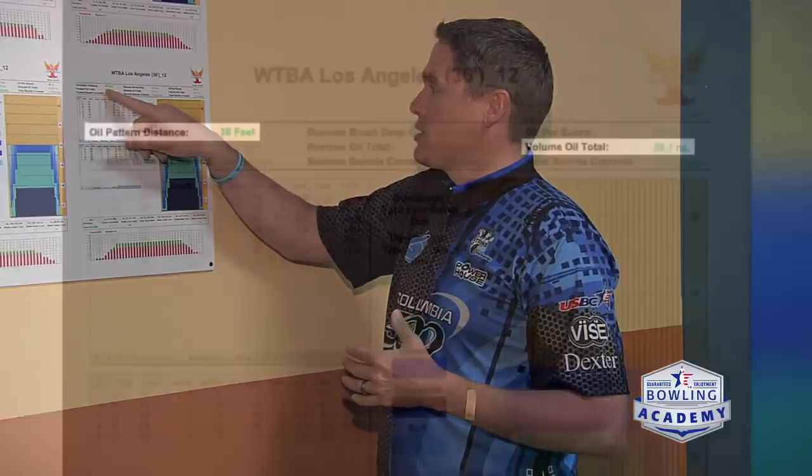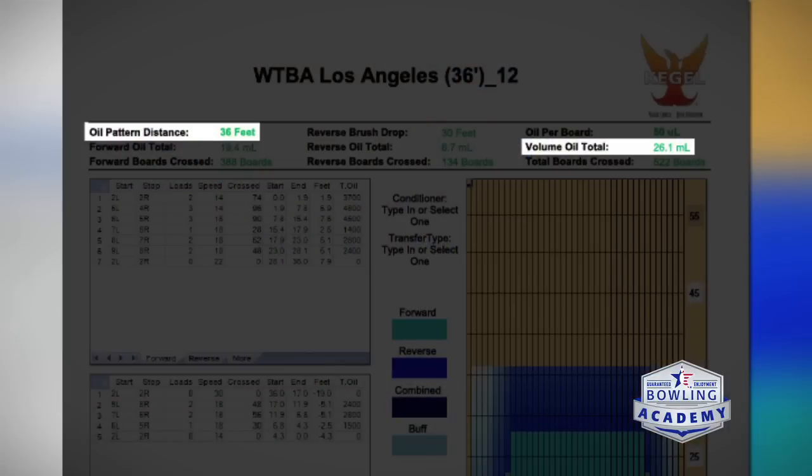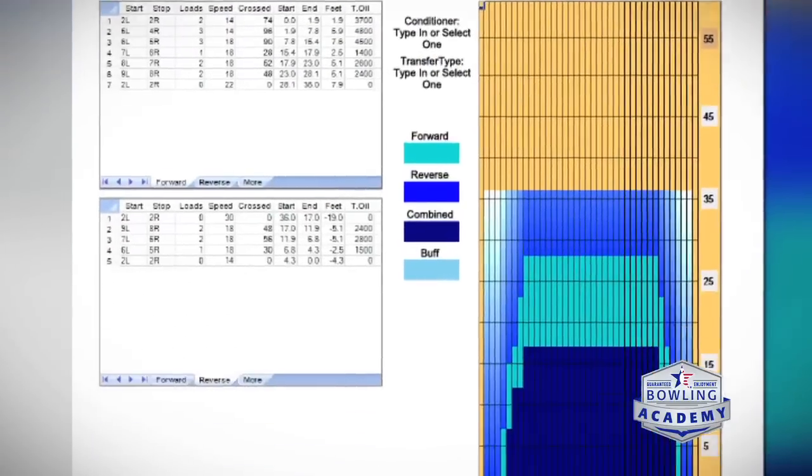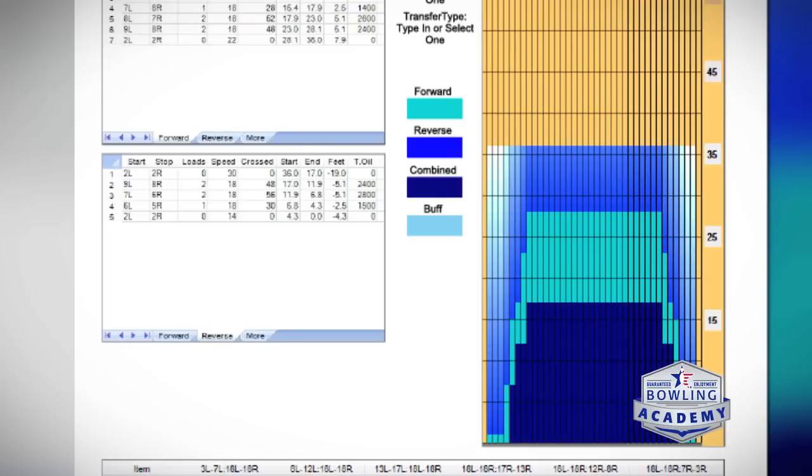In this particular pattern, it's 36 feet and the total volume is 26. So there's a little bit more volume than you see in your average house pattern. And the fact that it's only 36 feet long, when the average house pattern is 40 to 42 feet, means that it's more concentrated in the front part of the lane.